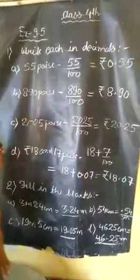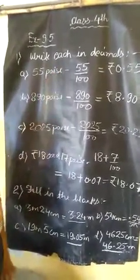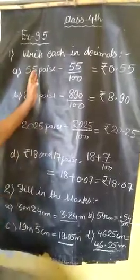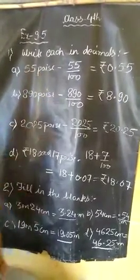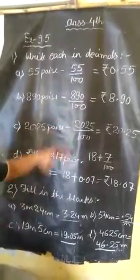And we learn the use of decimals with two decimal places. First question: write each in decimals. It is 55 paise. We have already solved this question by dividing by 100.